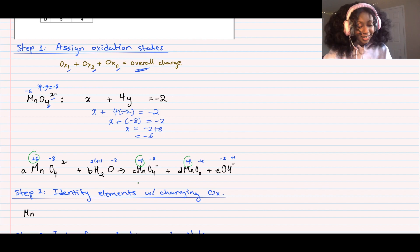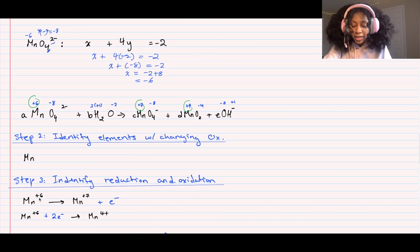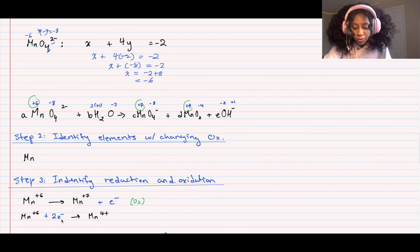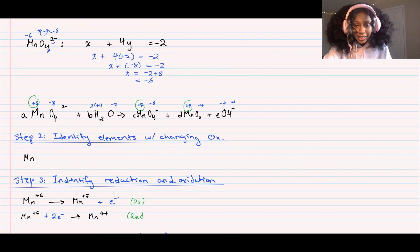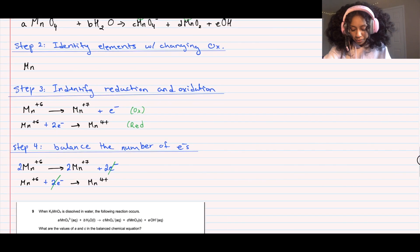Step two: identify elements with changing oxidation states - here it's only manganese. It goes from +6 to +7 and from +6 to +4. When Mn goes from +6 to +7 it loses an electron - that's oxidation (OIL RIG). When Mn goes from +6 to +4, it gains two electrons - that's reduction. To balance the electrons, we multiply the oxidation half-equation by two, giving two electrons on each side. Since they're on opposite sides of the two half-equations, they cancel out.